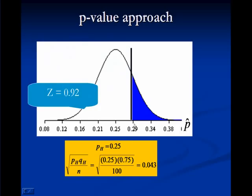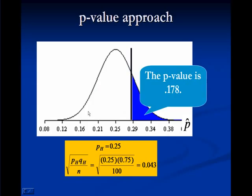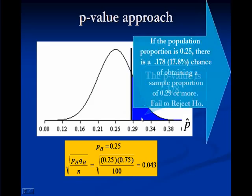And associated with that is a z-value of 0.92. And if you look up in the z-table, you'll end up with a p-value of 0.178. So that means if the population proportion is 0.25, that is, if the null hypothesis is true, then there's about a 17.8% chance of obtaining a sample proportion of 0.29 or more. That is the sample proportion that we did observe. So we're going to fail to reject H0.